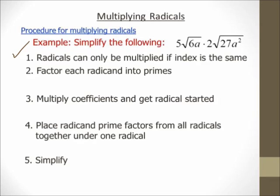Alright, step number two: factor each radicand into primes. So 6a is 2 times 3 times a. And then 27a squared is 3 times 3 times 3 times a times a. Alright, so step number three: multiply the coefficients and get the radical started.